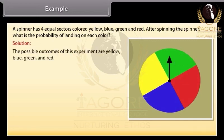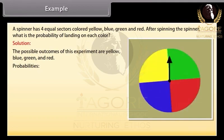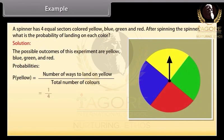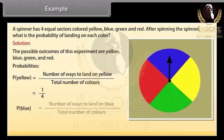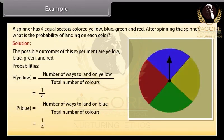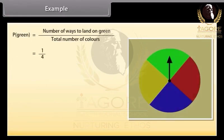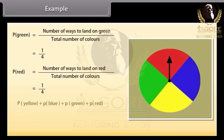The possible outcomes of this experiment are yellow, blue, green and red. Now let's find the probabilities. Probability of landing yellow is number of ways to land on yellow by total number of colors, that is, equal to 1 by 4. Probability of landing blue is number of ways to land on blue by total number of colors, that is, equal to 1 by 4. Similarly, we will find the probability for green and red. And if we add all these probabilities, we will get 1.